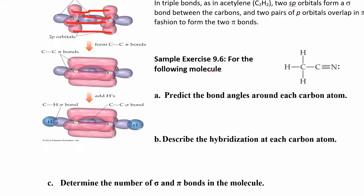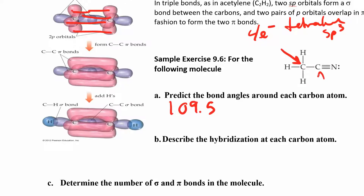Let's look at some sample questions. We need to predict bond angles around each carbon atom. Don't just look at the picture — you need to determine the type of carbon from the Lewis structure. The first carbon has four electron domains, so it's tetrahedral and sp3 hybridized, giving bond angles of 109.5°. The second carbon has only two electron domains, so it's linear with bond angles of 180°.